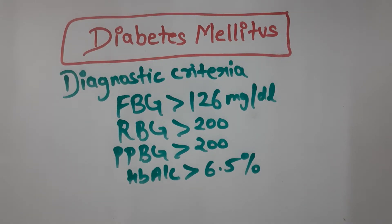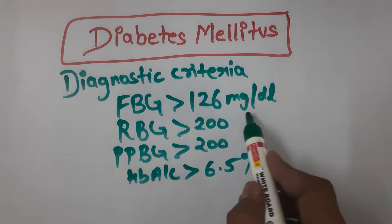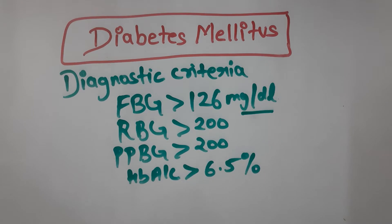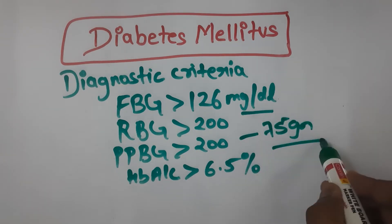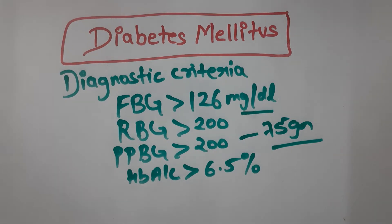Today we will discuss diabetes mellitus from a pathology point of view. First, the diagnostic criteria according to the ADA and WHO: presence of any one or more of the following — fasting blood glucose level more than 126 mg/dL, random plasma glucose level more than 200 mg/dL, two-hour postprandial plasma glucose level more than 200 mg/dL during OGTT with 75 grams of glucose, and HbA1c level more than 6.5%. Presence of any one or more of these equals diabetes mellitus.